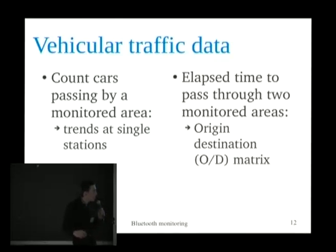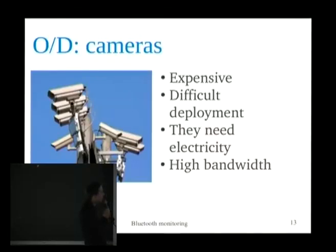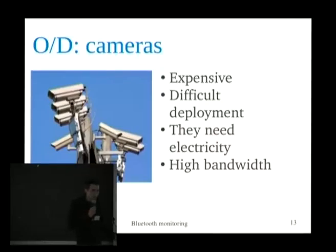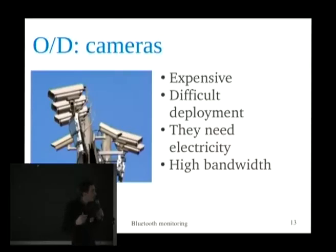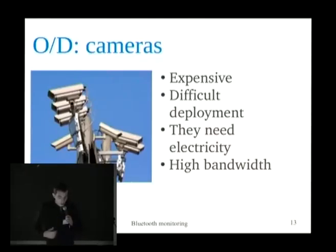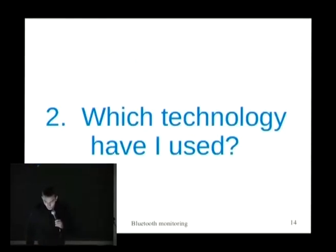When you have all those points you can understand the travel time and put all this data into a matrix called the origin-destination matrix. Nowadays municipalities use cameras to create this matrix, but these cameras are very expensive, difficult to deploy — they must be placed above the roadway, need power cables, connectivity, and so on. For this reason I started thinking about something that could be done more easily and dynamically.